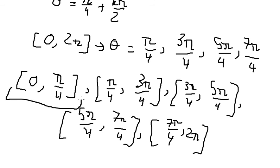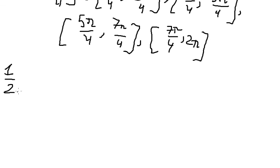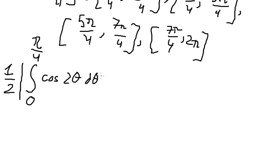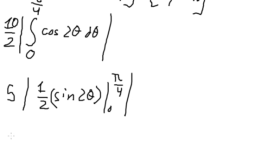I will calculate the integral over the interval from 0 to pi over 4. I put this in here, making sure everything is positive, so I use the absolute value. We have the factor 10 placed here. The antiderivative gives us 1 over 2 times sine 2 theta, and we put the bounds from 0 to pi over 4.